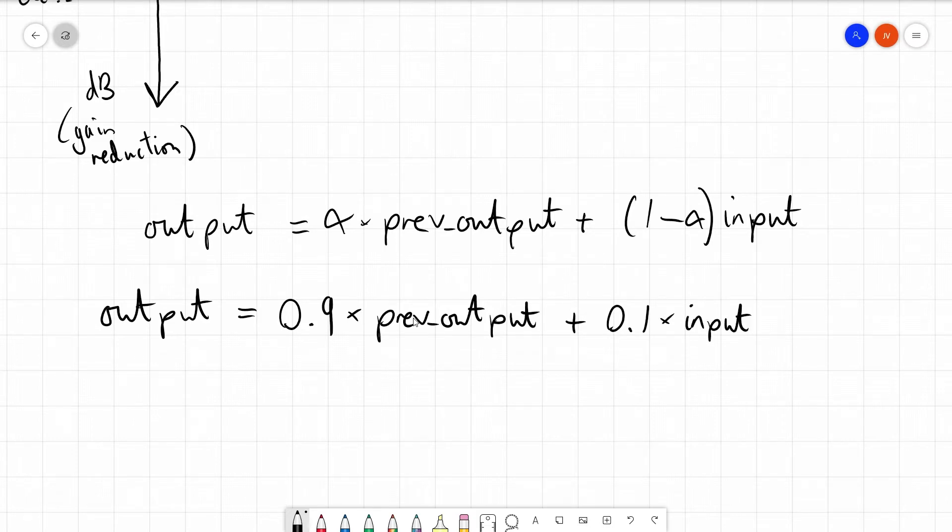So that's 0.1 times the input. You may also recognize this as being what people would call an RC circuit, or a resistor capacitor circuit. But I'm not going to discuss electronics in this video, because I want to keep things simple.